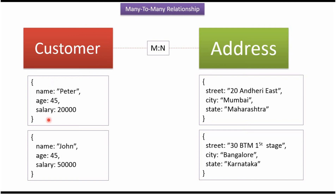Here you can see the customer Peter — he has two addresses, one in Mumbai and another in Bangalore. And here you can see the customer John — he has one address in Bangalore. If you see from the other side, the Mumbai address has only one customer, which is Peter. And the Bangalore address has two customers: Peter and John.